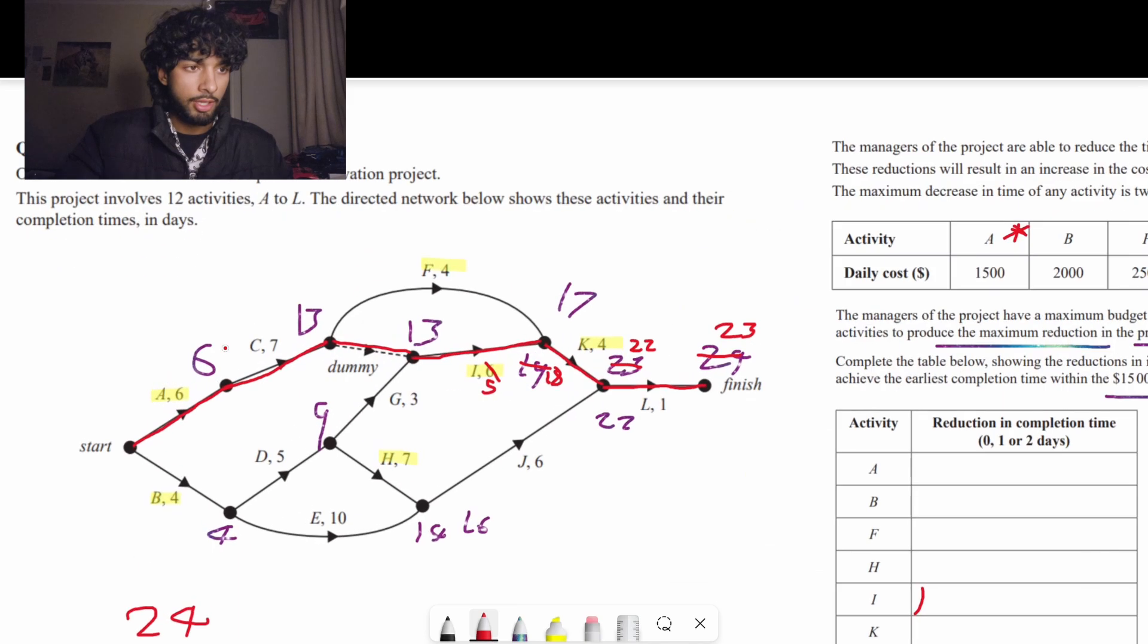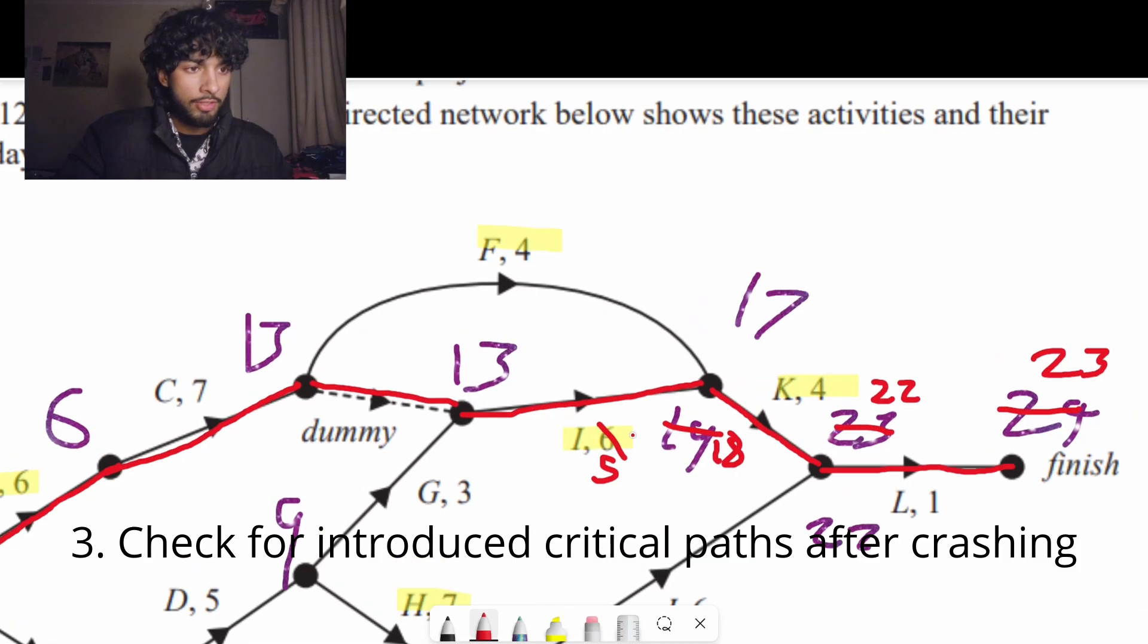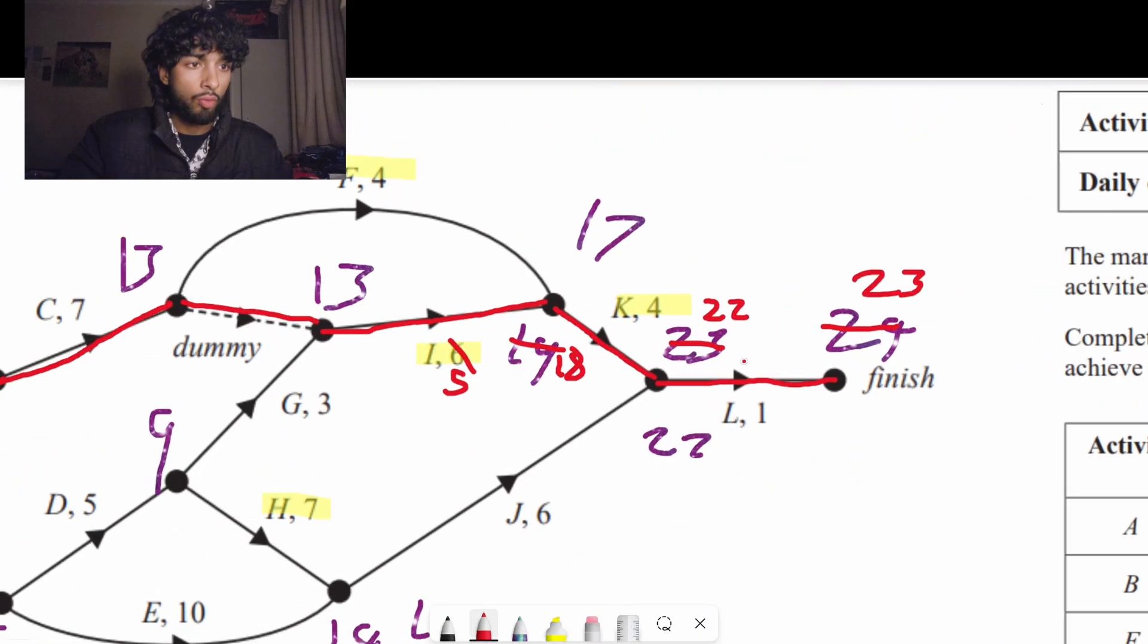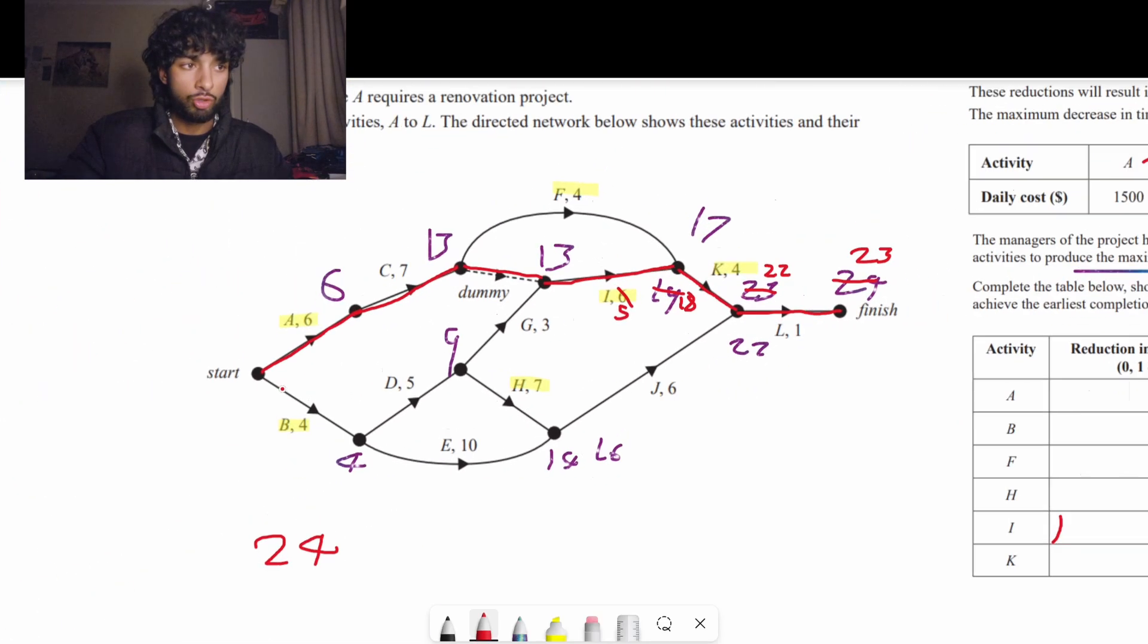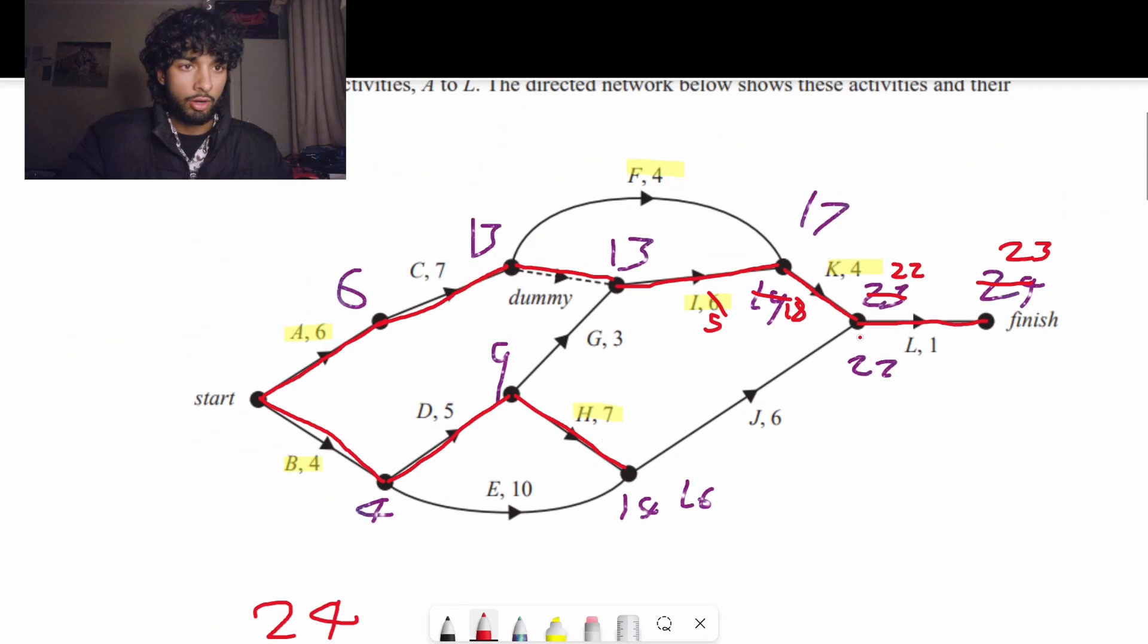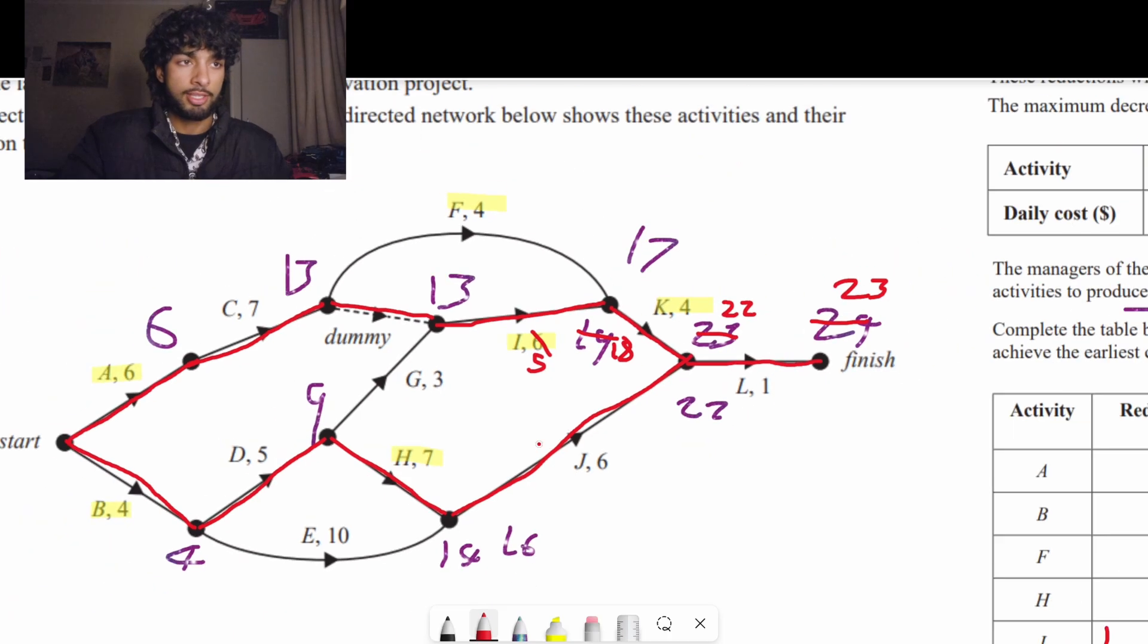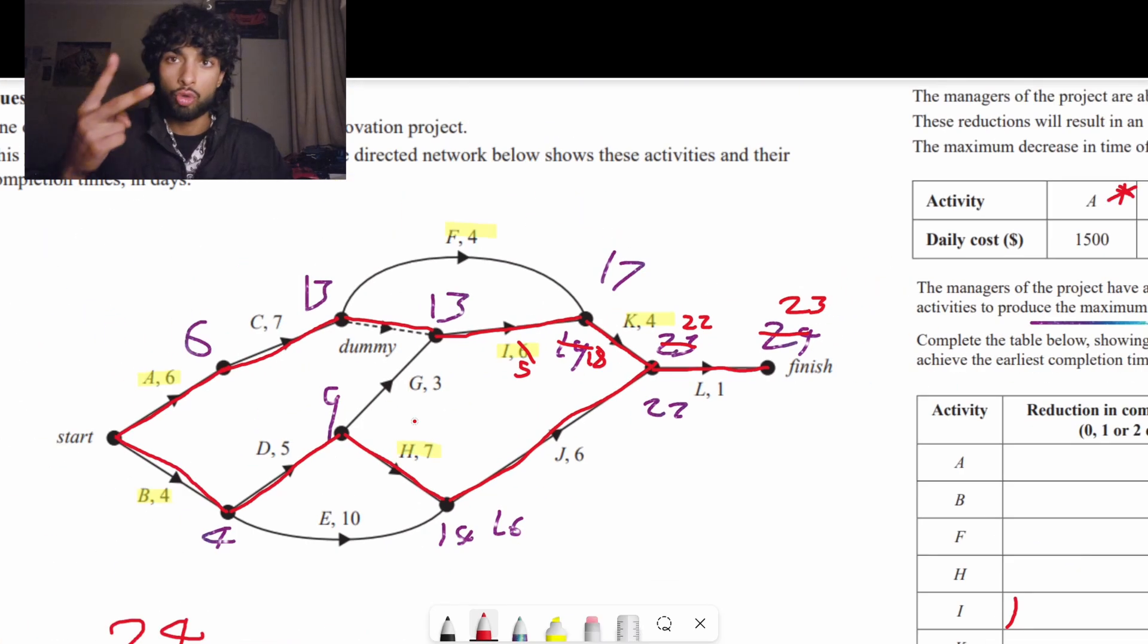Now the next thing is, we have to notice, has anything changed in our diagram? This is still not part of a critical network. But this is 22 and coming up here, it's also 22. So that actually introduces a new critical path going down to b, then up here. This is 22 days long and the other path is also 22 days long. So that means there's now two critical paths.